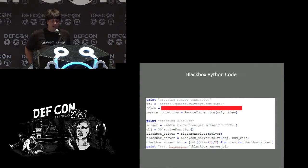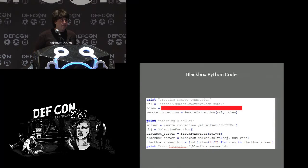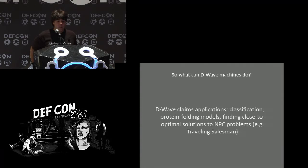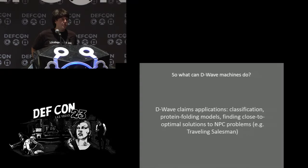Coding this all up is actually straightforward. Here's an example of some Python code which connects to the System 6 processor and minimizes a given function. You basically just put in the solver you want to use, some parameters, and a function which returns a value for how good a given bit string is. Then Black Box will look for the best bit string to minimize that function. D-Wave claims a lot of applications like classification, protein folding, and getting close to optimal solutions for NP-complete problems like traveling salesman, and they do have toy tutorials for most of these on their website.